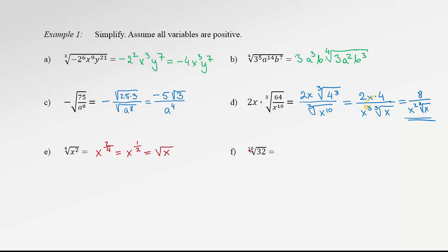For the 10th degree root of 32: it's a good idea to recall that 32 is a power of 2. Since 2 × 2 = 4, × 2 = 8, × 2 = 16, × 2 = 32, we get 2 to the 5. Again, we can't pull anything out of this radical, but we can rewrite it in exponential form: 2 to the 5 tenths. Reducing this fractional exponent gives 2 to the 1 half, which is the square root of 2 — a much nicer expression.